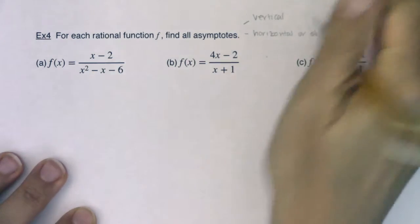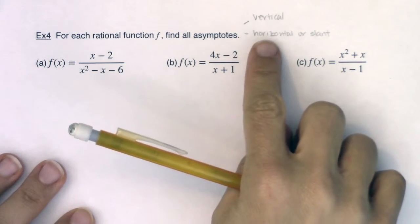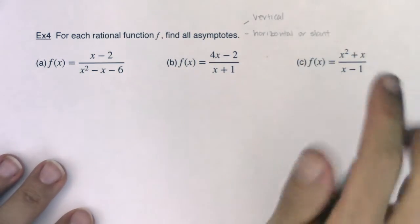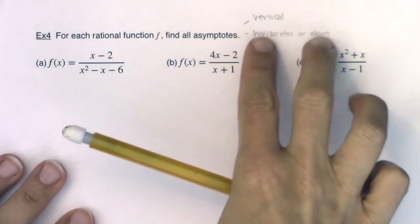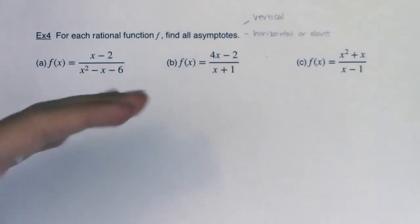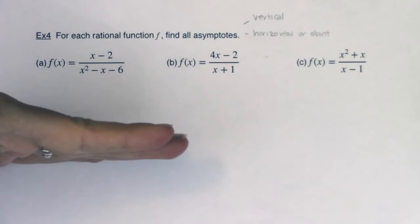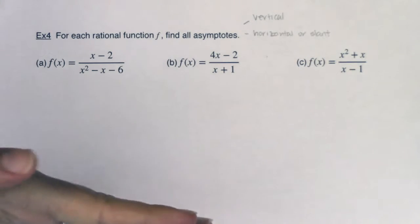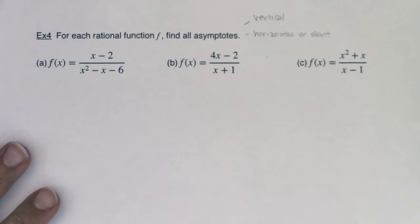I put these on an OR because you'll either have a horizontal asymptote or you'll have a slant — or potentially arrows — but you will never have both. So there will be no time where you say I have a slant asymptote and I have a horizontal asymptote. That won't happen, so just be aware of that.